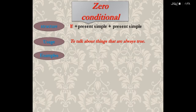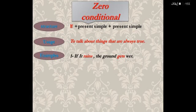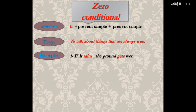Can you give me some examples for 'if'? Excellent. If it rains, the ground gets wet. The verb 'rains' is present simple — rain plus S because there is 'it.' 'Gets' — get plus S because there is 'the ground.' Present simple plus present simple.